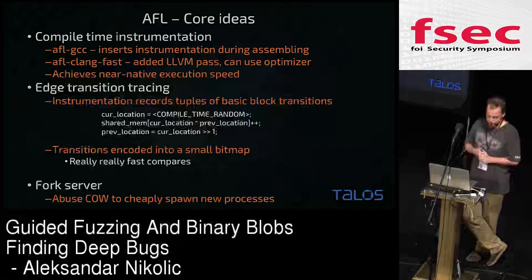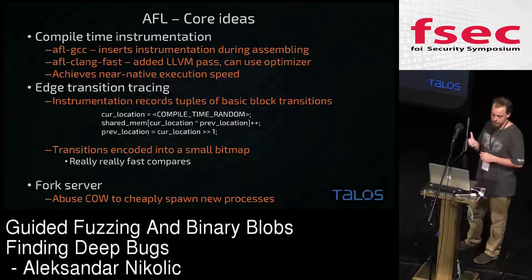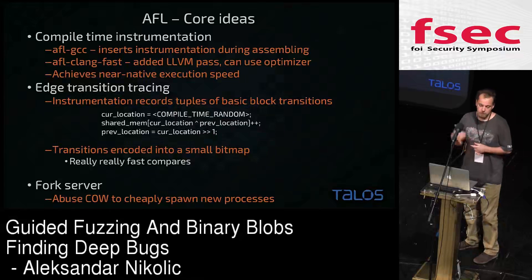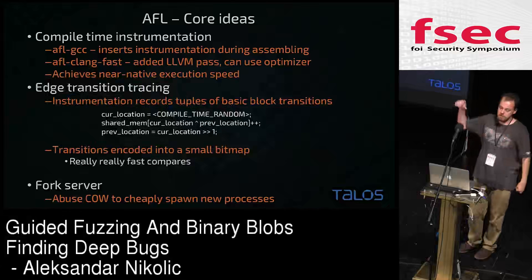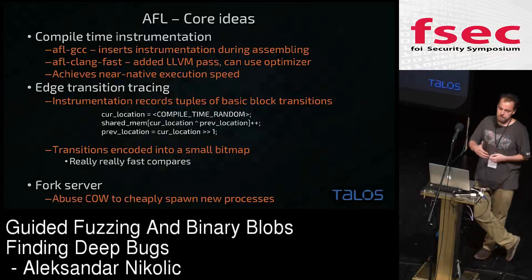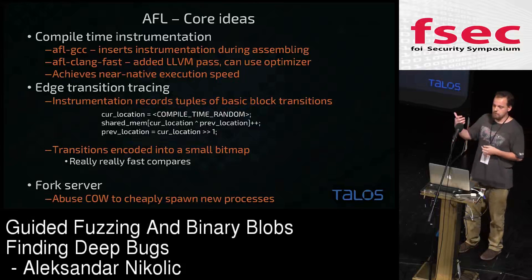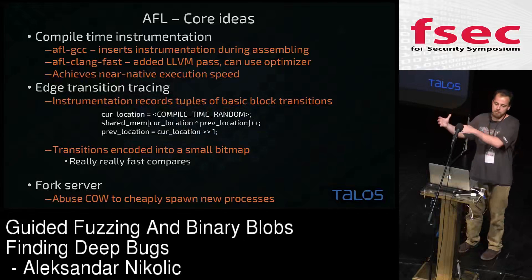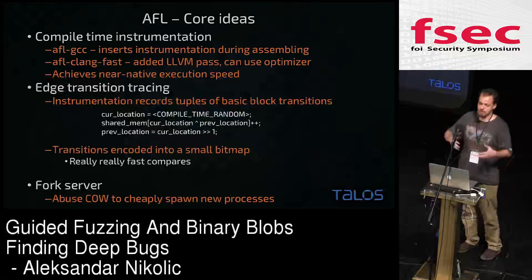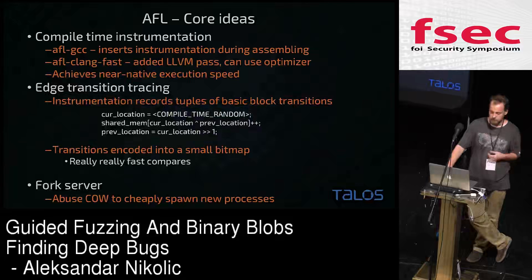All of these are recorded into a relatively small bitmap, which is lightning fast to compare — because you want to compare them again and again to know which test cases are better. Another performance bonus that AFL has is the fork server. When it starts the process, it injects a forking daemon at the start of the process and forks an image. Because on Linux, fork is implemented as copy-on-write, we get new processes essentially for free — no physical memory actually gets copied.